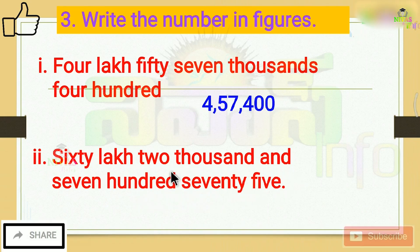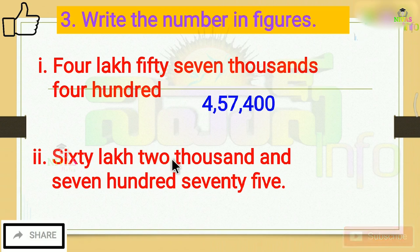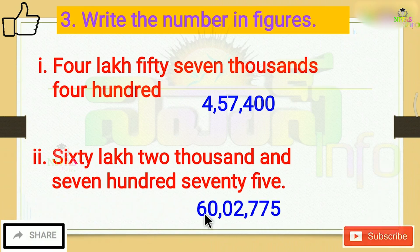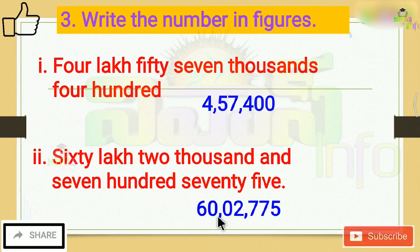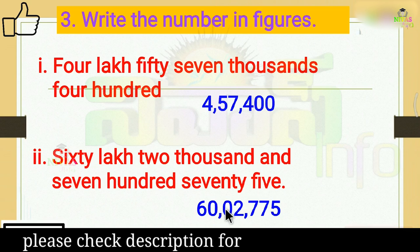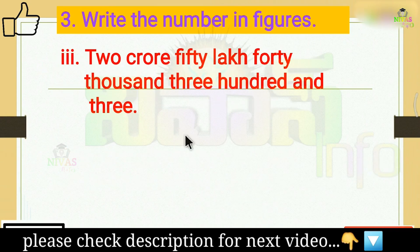When a place value is missing — for example, ten lakhs and lakhs are missing, or ten thousands is missing — we write zero in that position. So if lakhs are zero, we write zero lakhs. For example: sixty lakhs, two thousand. If ten thousands has no value, we write zero there. Then the number is correct.